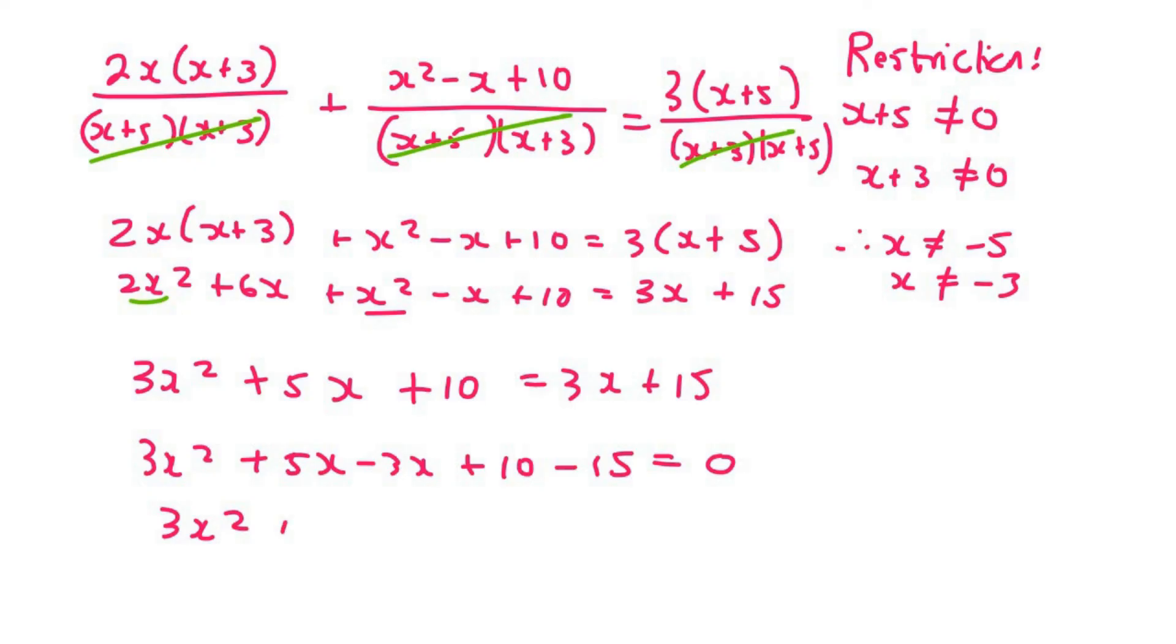And so that's going to be 3x squared plus 2x minus 5. And so now we need to, I would just use the quadratic formula over here to be very honest. And that gives us answers of x equals to 1 or x equals to negative 5 over 3.